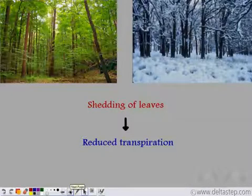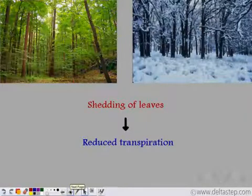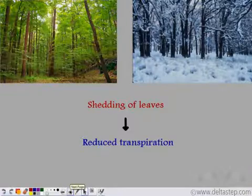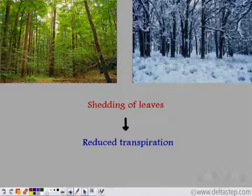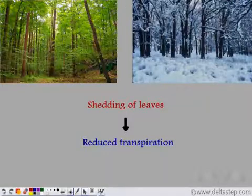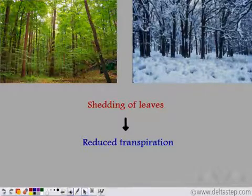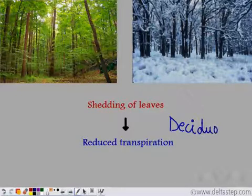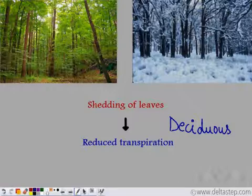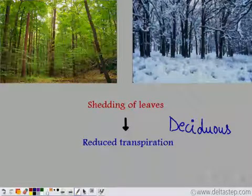Now, what about plants present in extremely cold climates that do not get free water because all the water has converted into ice? These plants shed their leaves. If the leaves are shed, the number of stomata will automatically decrease and so there will be reduced transpiration. These plants that shed their leaves are known as deciduous trees.